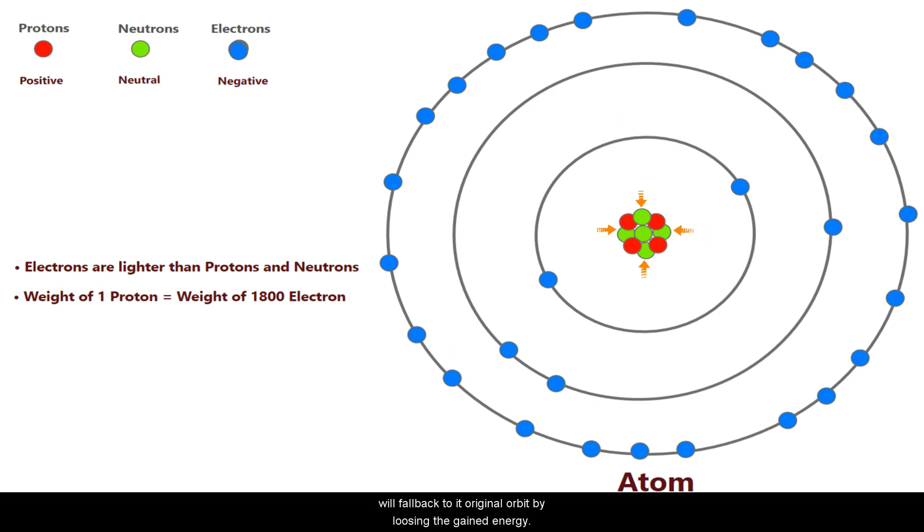And eventually, it will fall back to the original orbit by losing the gained energy. Based on the type of atom, the energy that is emitted from the electron could be a heat energy or light energy or basically it could be any form of energy.